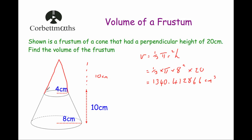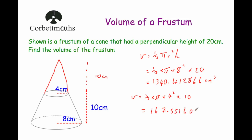Now we're going to work out the volume of the cone that's been removed — the cone at the top. So that's going to be volume equals one third times pi times the radius four squared, times the height. The height of this smaller cone was equal to 10. And when we do that, we get 167.5516082.